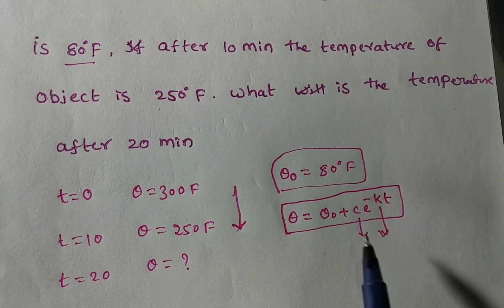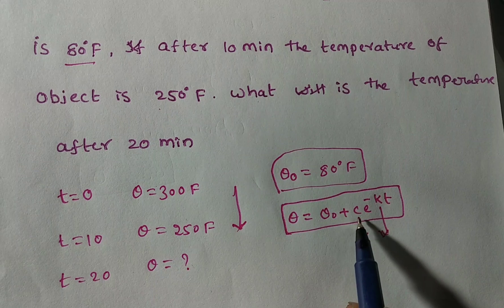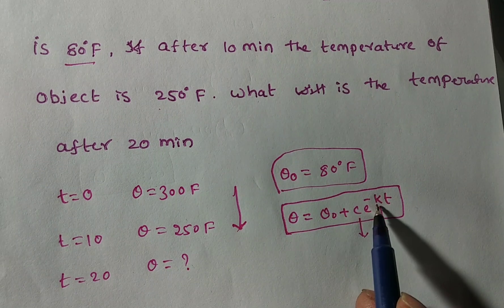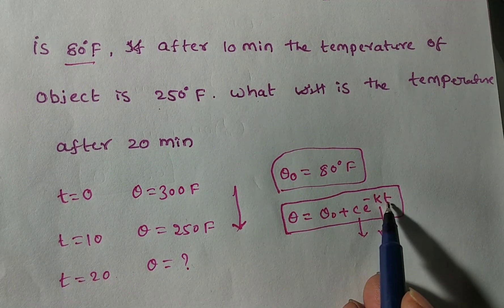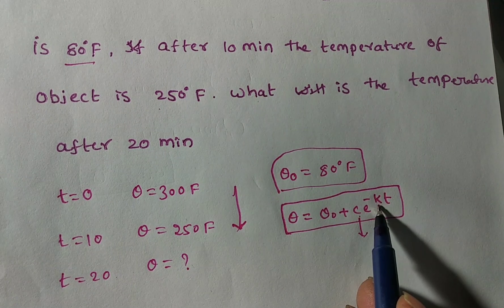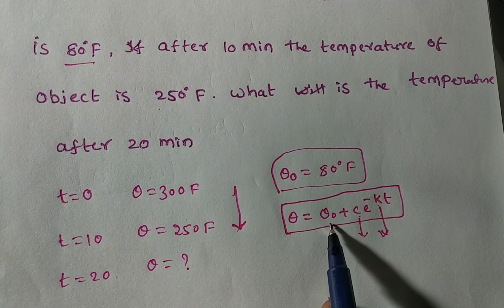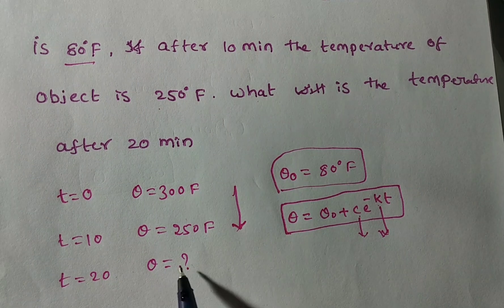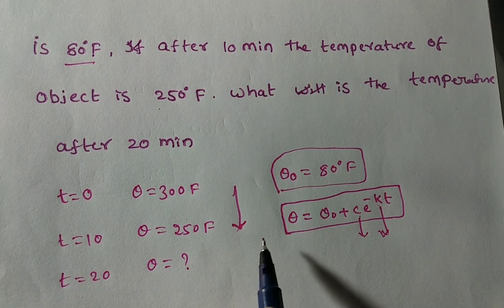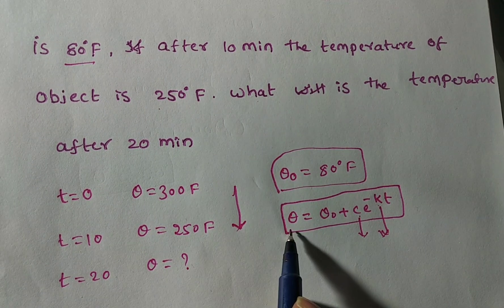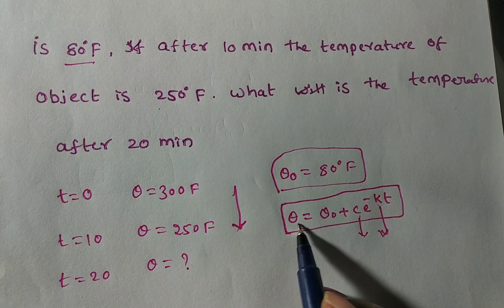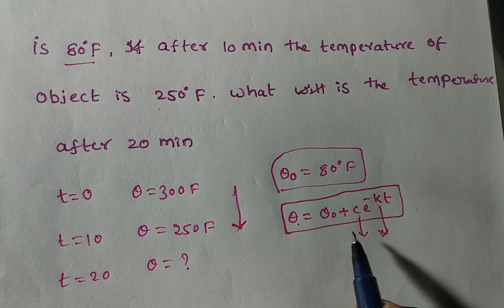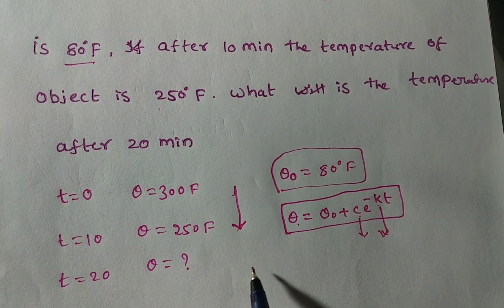In step 3, theta naught is known, C is obtained from step 1, K from step 2, and T is given. So the only unknown is theta, which can then be found. Alternatively, if theta is given, you can find T. So theta and T are the unknowns beyond the first two steps.